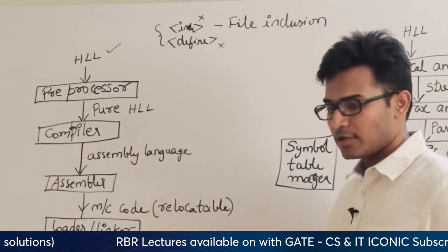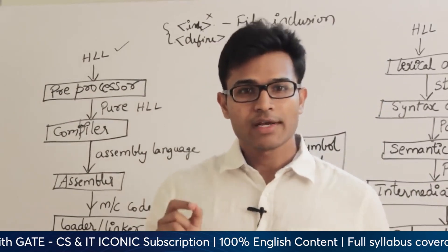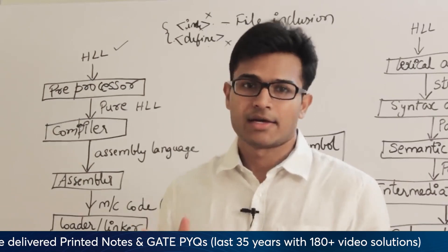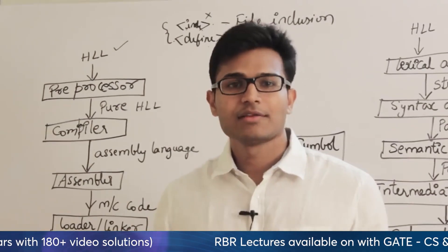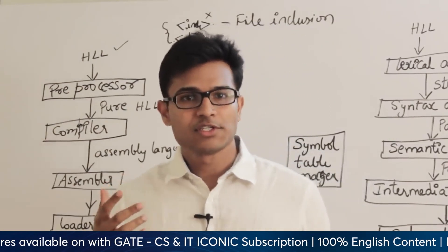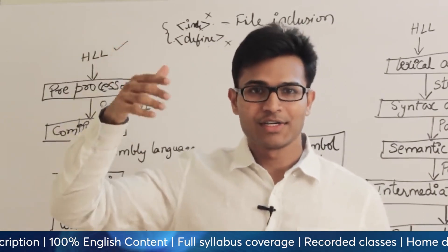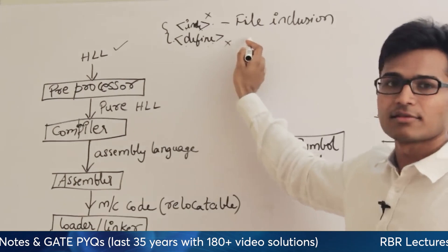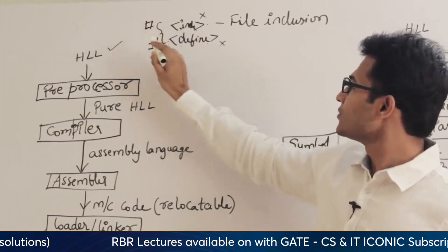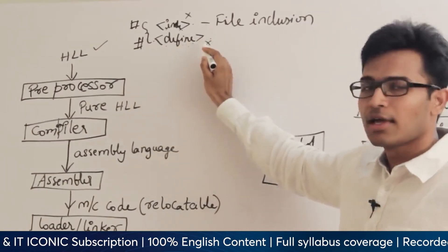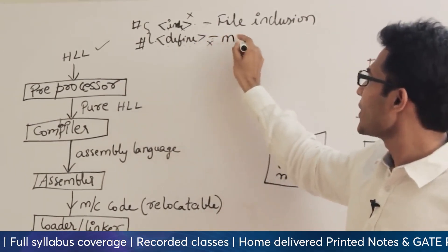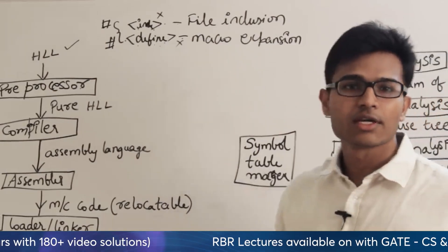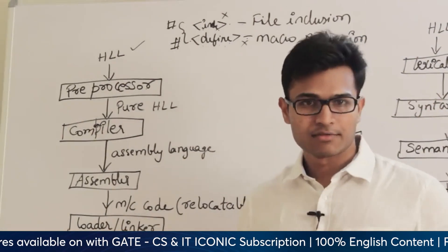The second directive is hash define. Sometimes you might have to define a constant — for example, the interest rate provided by a bank. It is a constant but its value can change. Instead of manually changing all occurrences in the program, you can just change the define line. If you change the value of the hash define constant, it is automatically reflected everywhere. This is called macro expansion. We also write macros, which are small functions for which we don't want the overhead of a real function call. That is why we go for macro expansion.